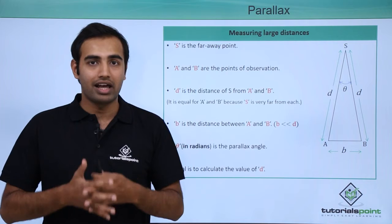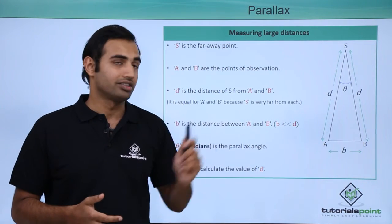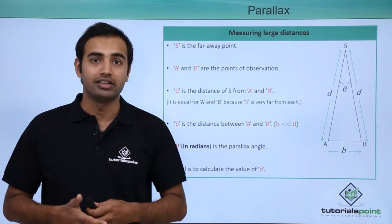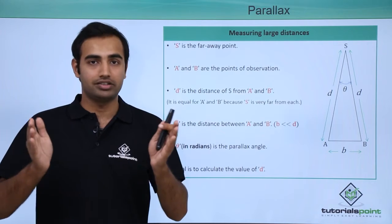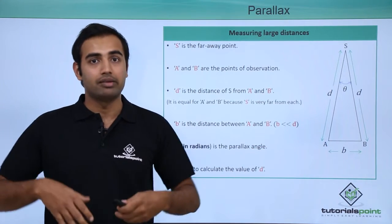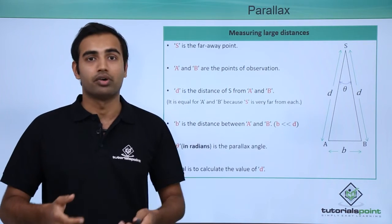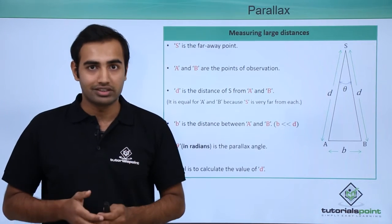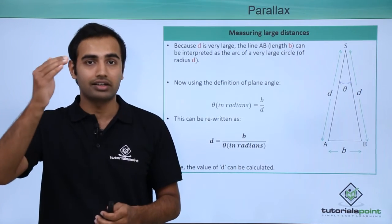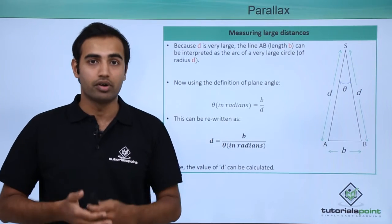Over here the parallax angle or the angle between the two points of observation is this angle theta. The first thing that we need to understand here is that the length small d is so much large compared to the length small b that this AB line can be estimated to be an arc of a circle of radius small d. Once we have done this assumption I can simply say that the angle theta can be defined as arc length upon radius which in this case will simply be b upon small d.